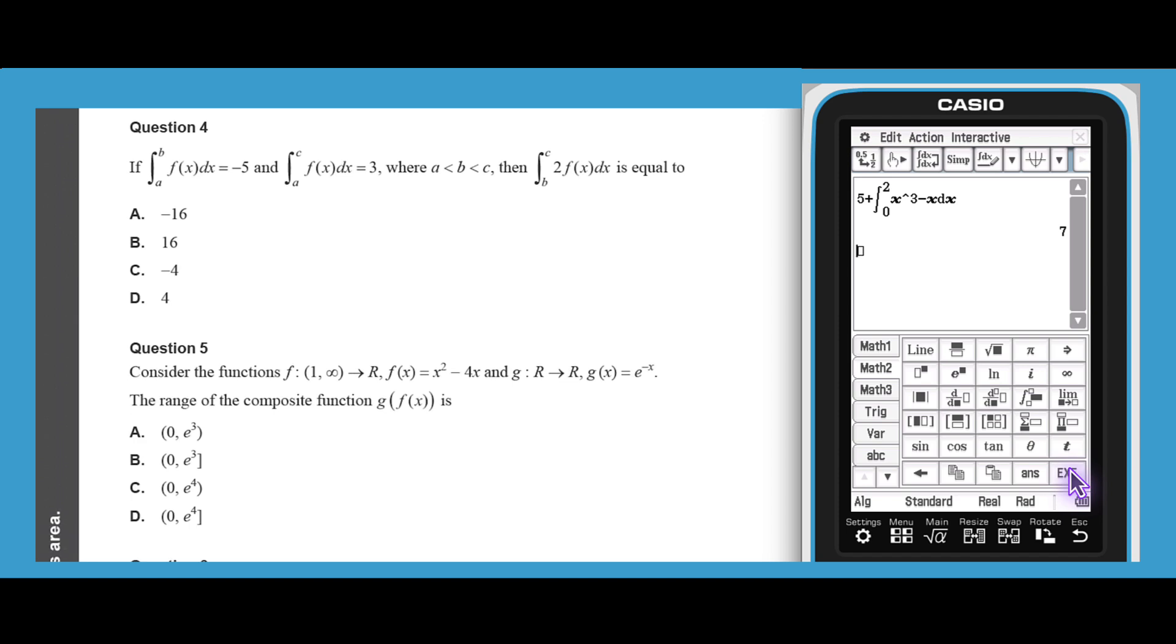Question 4 provides us with the value of some definite integrals of the function f of x for regions between values a, b, and c. These sorts of questions are often tackled best by starting with the idea that the definite integral from a to b plus the definite integral from b to c of some function f of x is equal to the definite integral of that function from a to c.